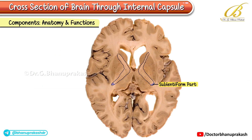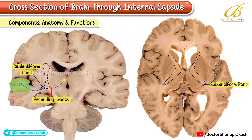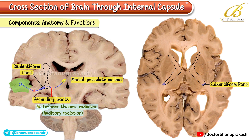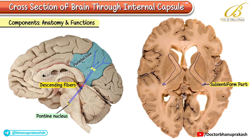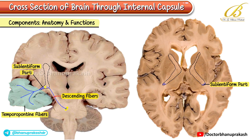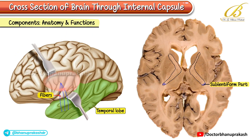Sublentiform part: The sublentiform part includes ascending and descending tracts. Ascending tracts: Inferior thalamic radiation and auditory radiation, which carries auditory information from the medial geniculate nucleus to the auditory cortex. Descending tracts: Parietopontine and temporopontine fibers, as well as fibers between the temporal lobe and thalamus.